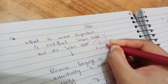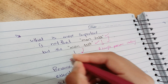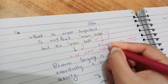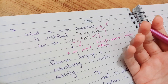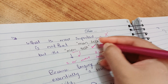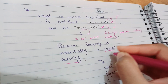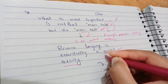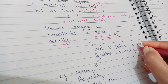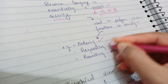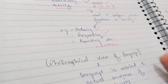Halliday says that what is more important is not 'man talk' but 'men talk.' Man talk means a single person talking, but men talk means two or more people talking. When one person is talking and the other doesn't respond, that is not proper communication. Language is essentially a social activity — person A and person B — and it is used to perform various functions in society such as ordering, requesting, promising, and expressing emotion.